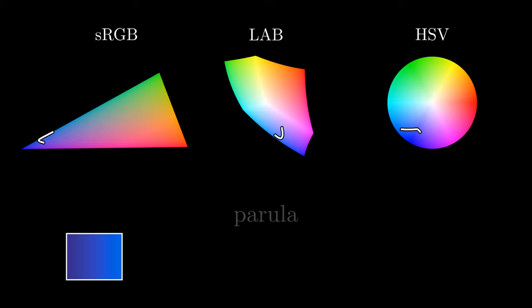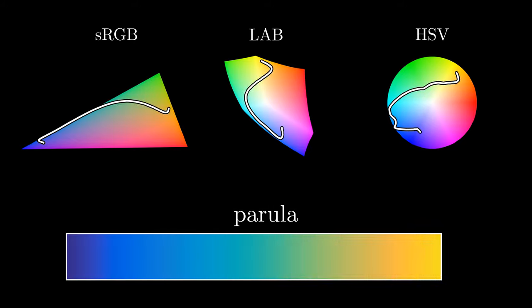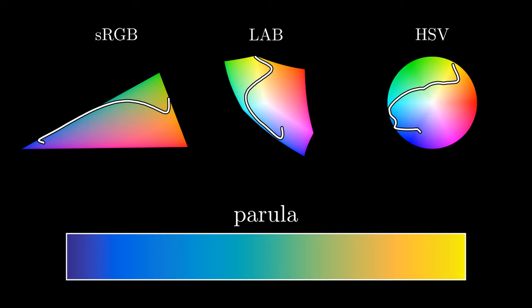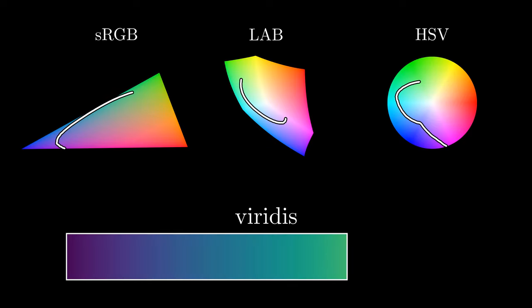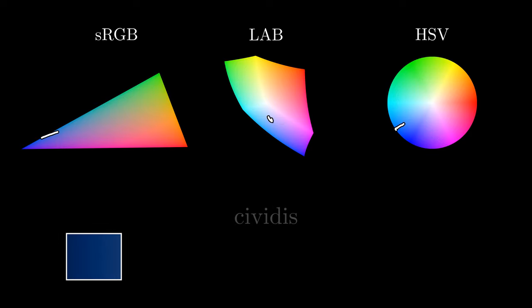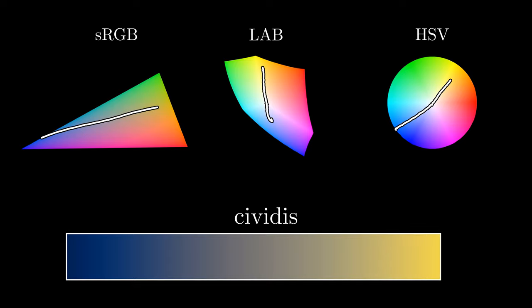Parula is a path through lab space that took so much work to create that it has been copyrighted. Although, what it means to copyright colors is anyone's guess. Viridis was created using an even newer color space that more accurately maps the human visual cortex.